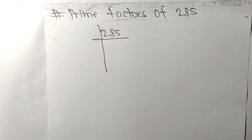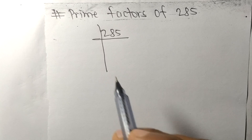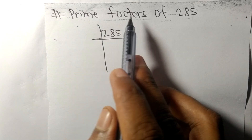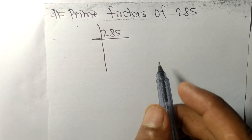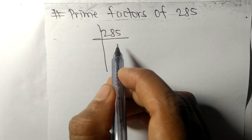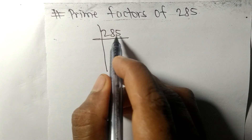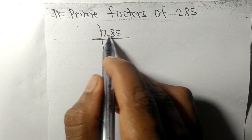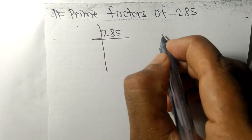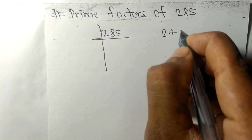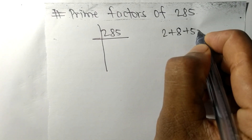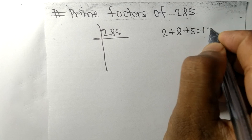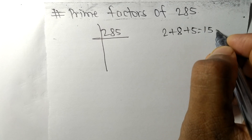Today in this video we shall learn to find the prime factors of 285. We take 285 and when we add all its digits — 2 plus 8 plus 5 — we get 15.